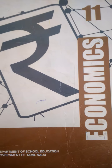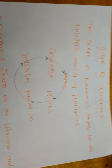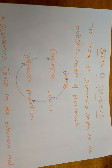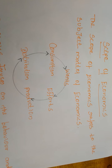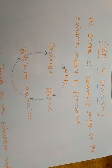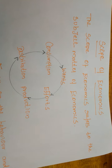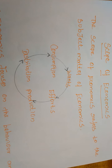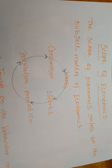The scope of economics refers to the subject matter of economics. On the basis of the subject matter of economics, we can clearly understand the scope of economics. It also throws light on whether economics is an art or a science — and if science, whether it is a positive science or a normative science.